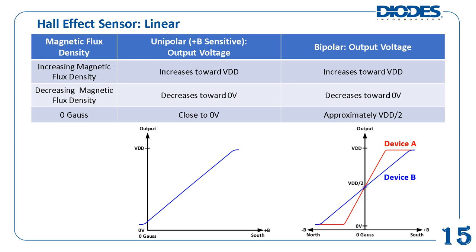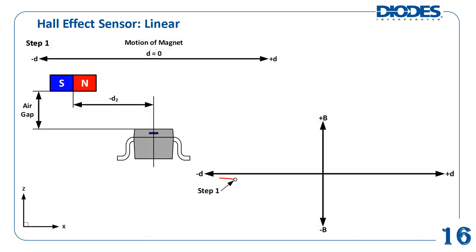The magnetic response graph of the bipolar linear Hall Effect sensor shows example device A in red having a higher sensitivity than example device B in blue. This example shows a bipolar ratiometric linear Hall Effect sensor and associated magnet in a slide-by configuration with a fixed air gap. The variable distance d is the distance from the center of the magnet to the center of the sensor. The magnet is moving in the x-axis direction from the left of the sensor (negative d position) to the right of the sensor (positive d position), and the sensor is detecting the z-axis component of the magnetic field.